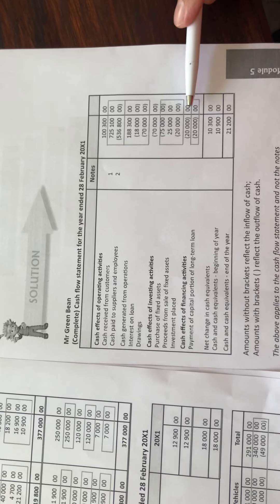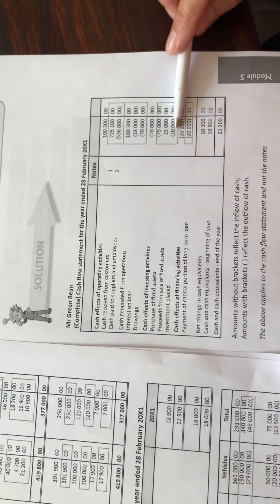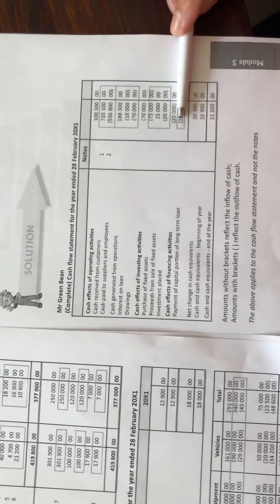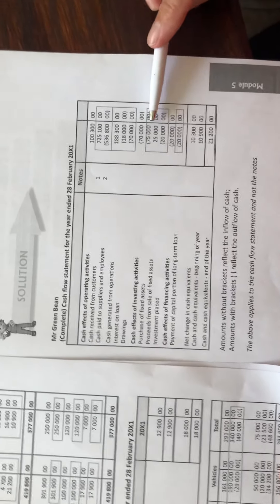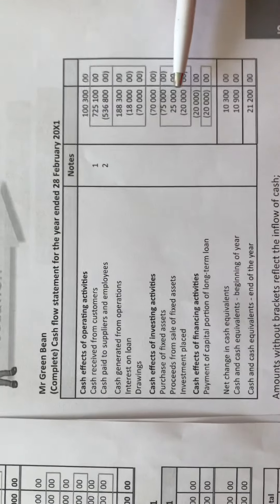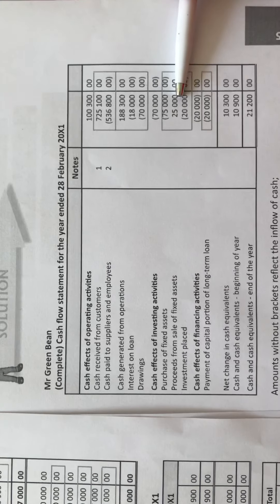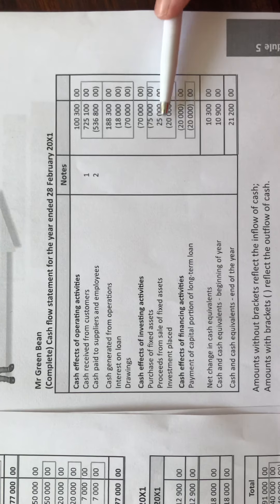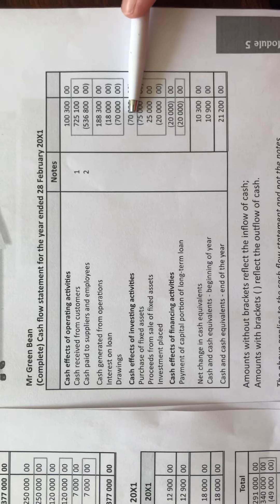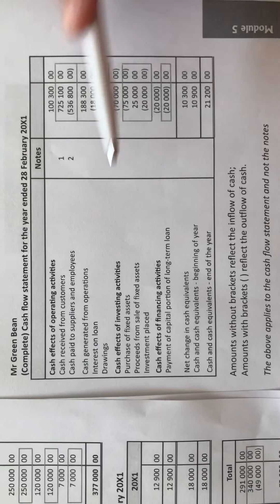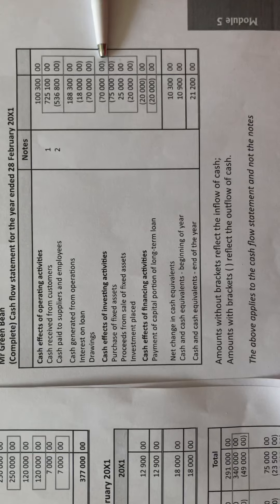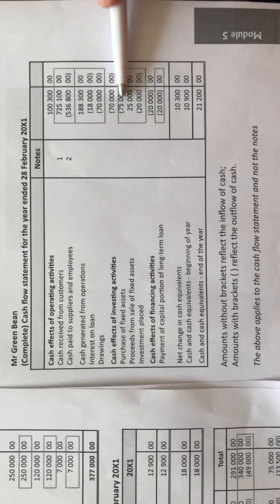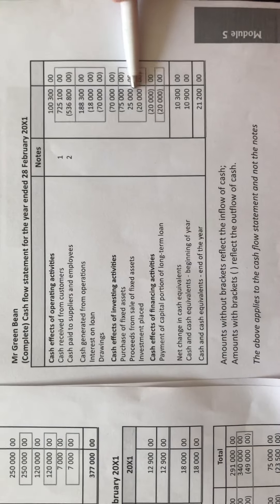So the cash effects of investing activities: minus 75,000 purchase, plus 25,000 proceeds from sale, less 20,000 investment placed — 75 plus 25 less 20 gives you negative 70,000 as the cash effects of investing activities.